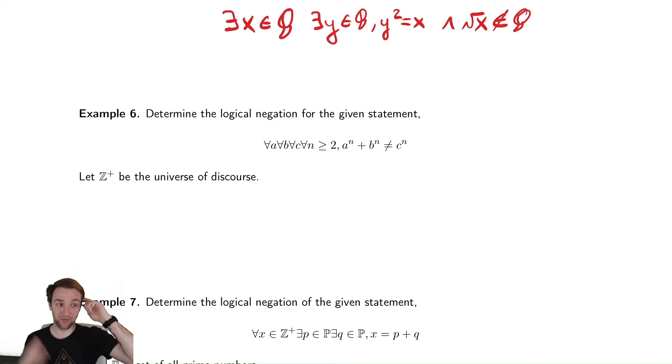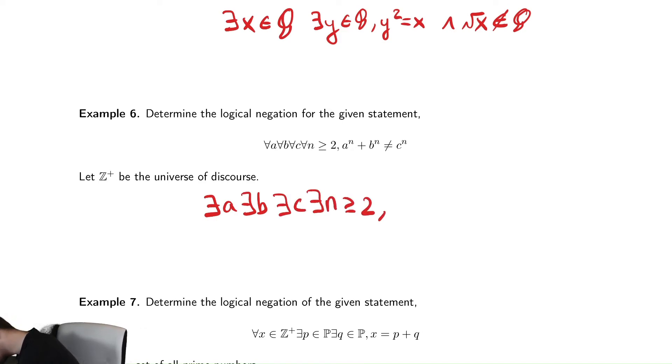I'm going to explain how we can do this fast. We have four quantifiers back to back. So we change all of them. There exists, there exists, there exists, and there exists. So writing this as there exists an a, there exists a b, there exists a c, there exists an n greater than or equal to two, such that the negation of the inside, the opposite of doesn't equal, is an equal. So a to the n plus b to the n is equal to c to the n.